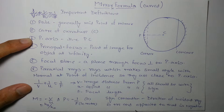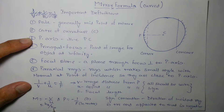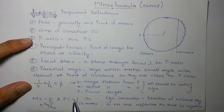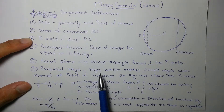Sign convention: the direction of the incident ray is positive, and opposite to that is negative. Magnification for a mirror is defined as −v/u, which equals height of image (hᵢ) by height of object (hₒ). Power in diopters is −1/f where f is in meters. These are the important expressions for mirrors along with the mirror formula.